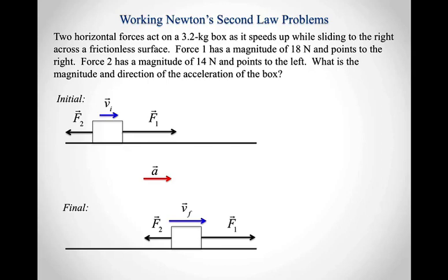Step one is the couple of sketches with velocity and acceleration information added. Step two is drawing the free body diagram. I'll draw from a single point using the point mass model. Does the box have mass? Yes — so there's a gravitational force pulling downward. Is it in contact with the surface? Yes — so there's a normal force pointing up. I'm told the surface is frictionless, so I don't need a friction component; just the normal perpendicular to the horizontal surface pointing up.